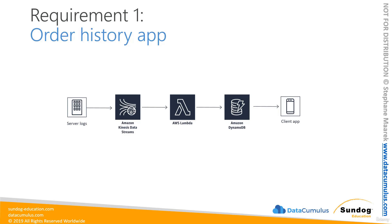The first requirement is to offer an order history function on the site's mobile app. To do this, we'll simulate order data being generated on an EC2 instance and publish that data using Kinesis Data Streams into an AWS Lambda function, which in turn will populate an order database in DynamoDB that our app can read from.